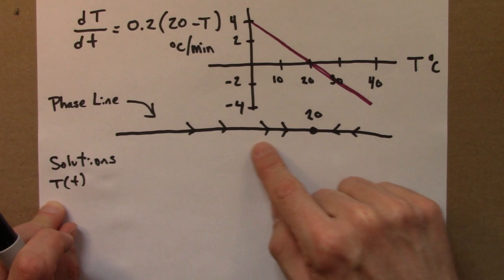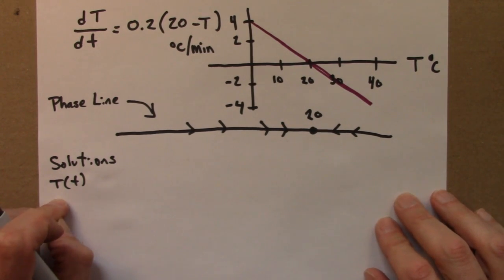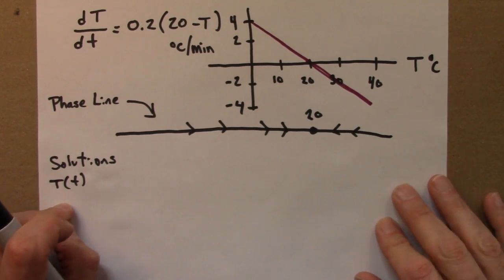So this phase line is similar to the phase line for iterated functions. Now I'll sketch some solutions that are similar to the time series plots for iterated functions.